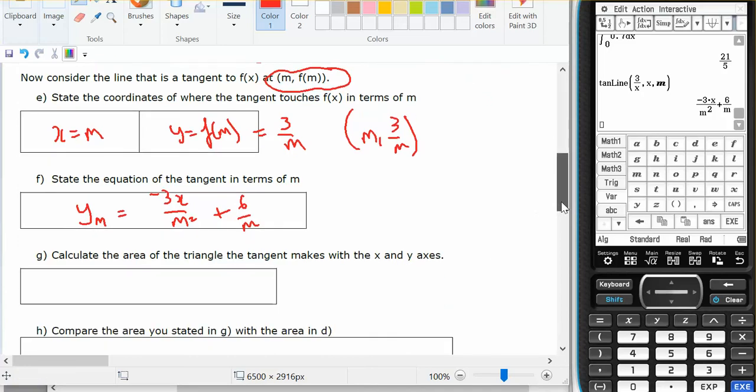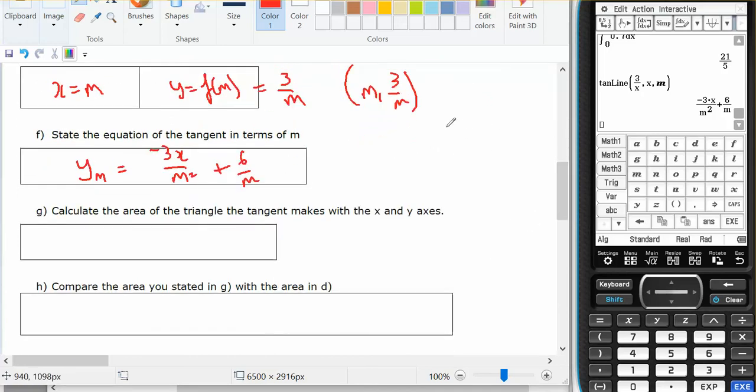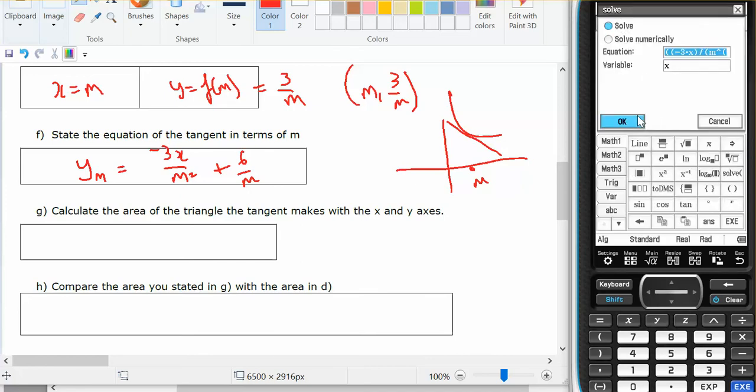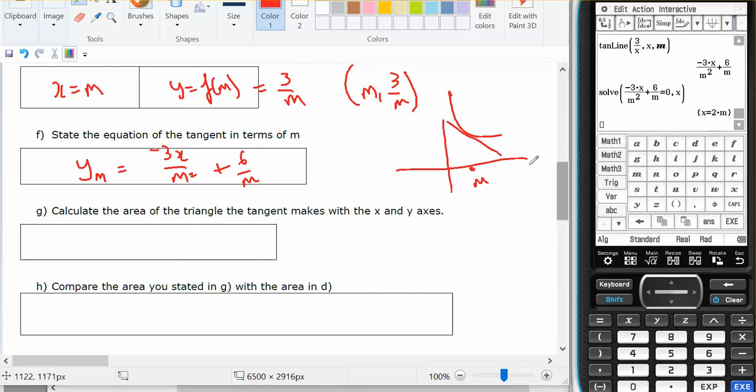Calculate the area of the triangle. I've now got this placed at m. I'd like to find out what the x intercept is, so let's set that equal to 0 and solve for x. It's at 2m, so I know that's at 2m.